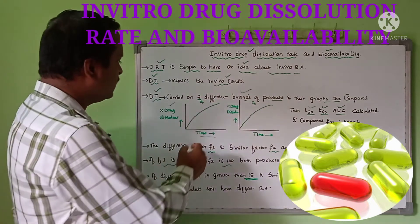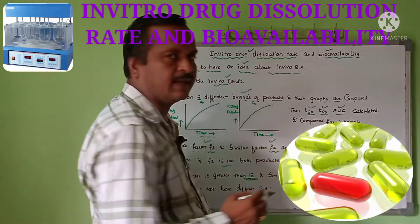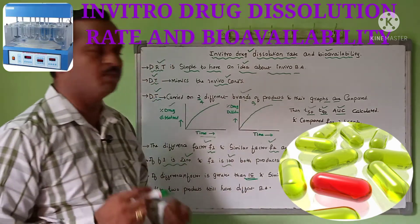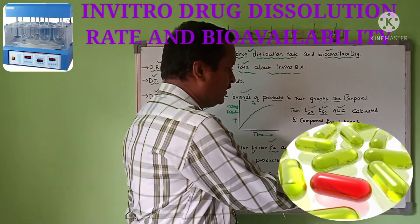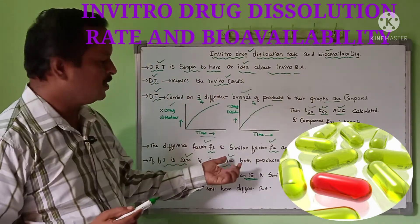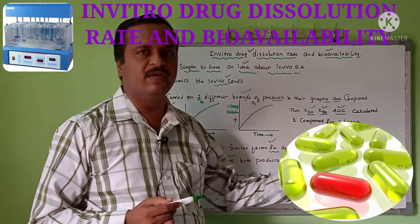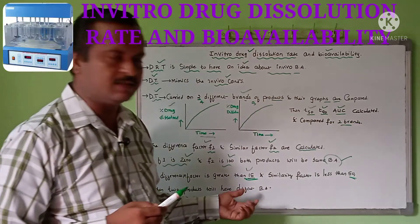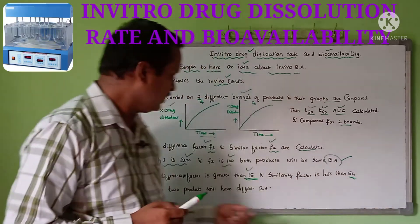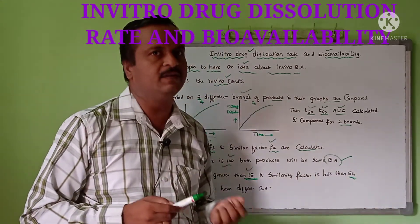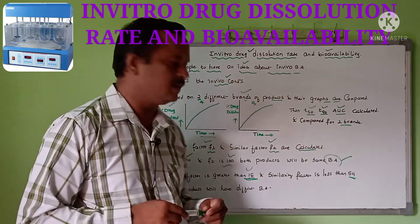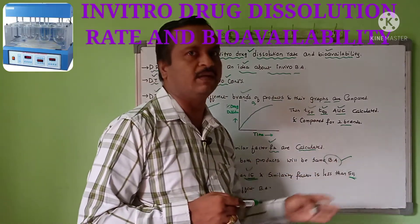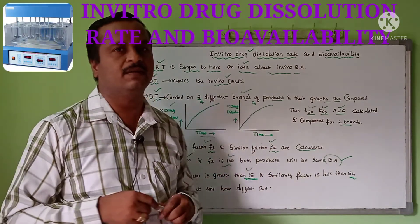The difference factor F1 and similarity factor F2 are calculated separately. If F1 is 0 and F2 is 100, both products have the same bioavailability. If the difference factor F1 is greater than 15 and the similarity factor F2 is less than 50, it indicates that the two products have different bioavailability.